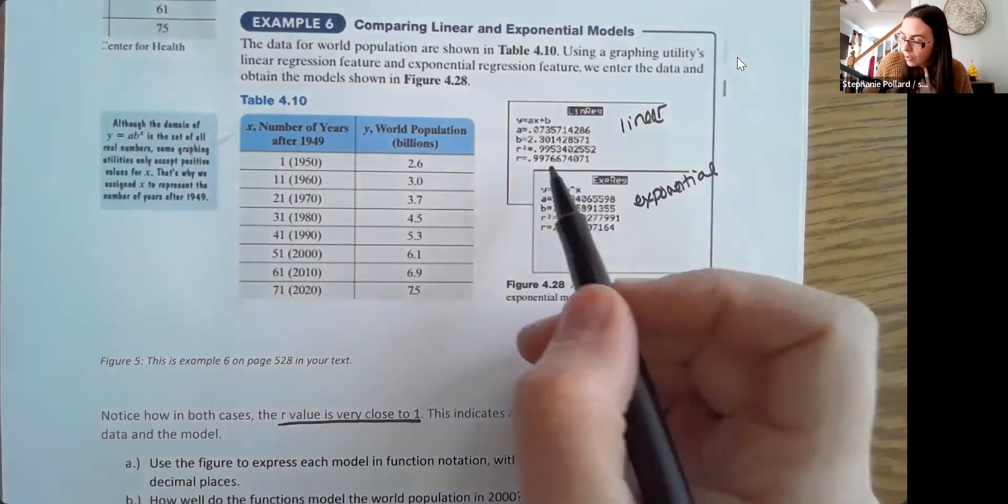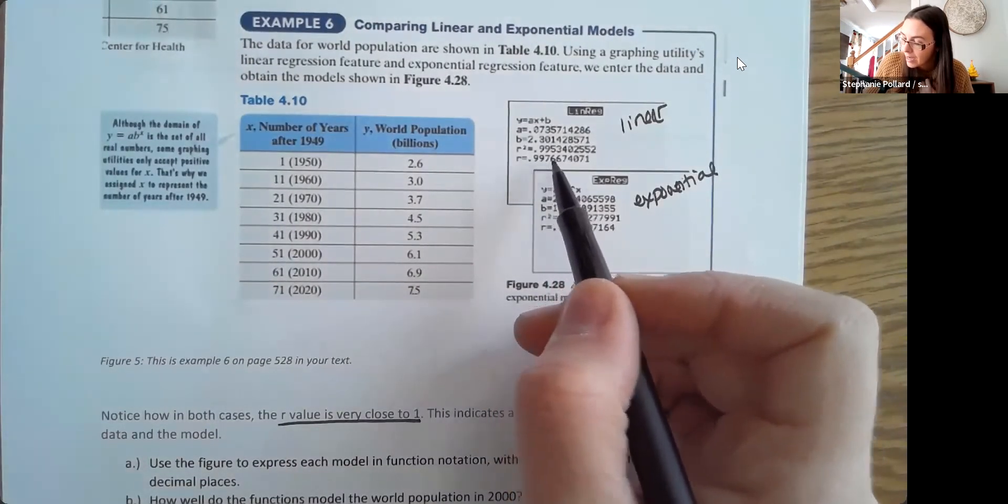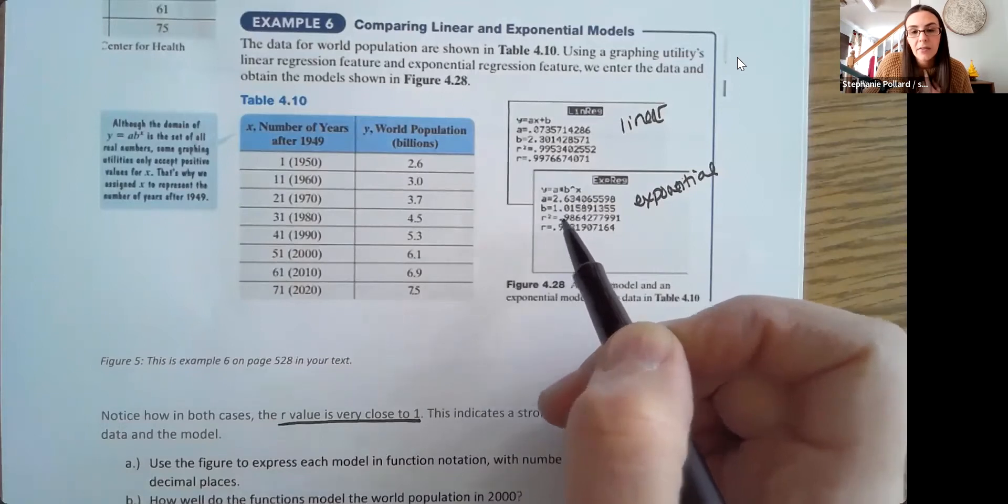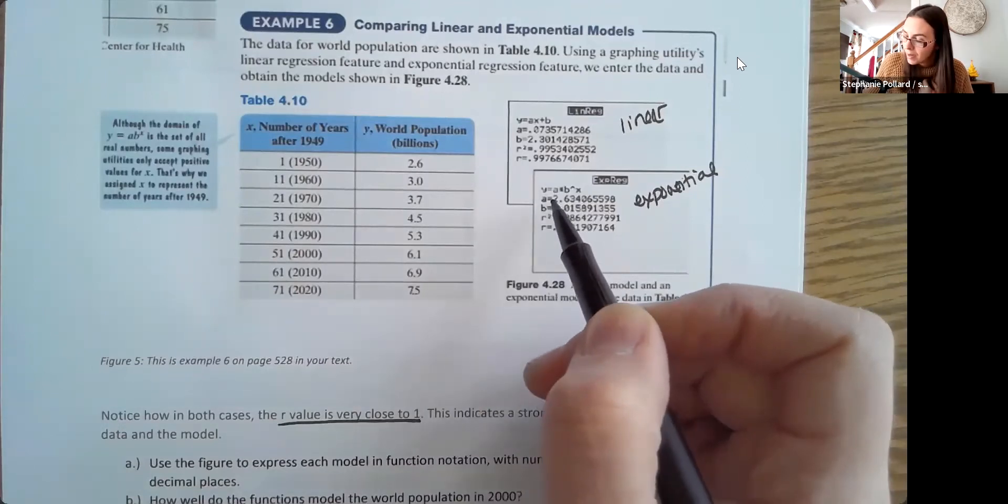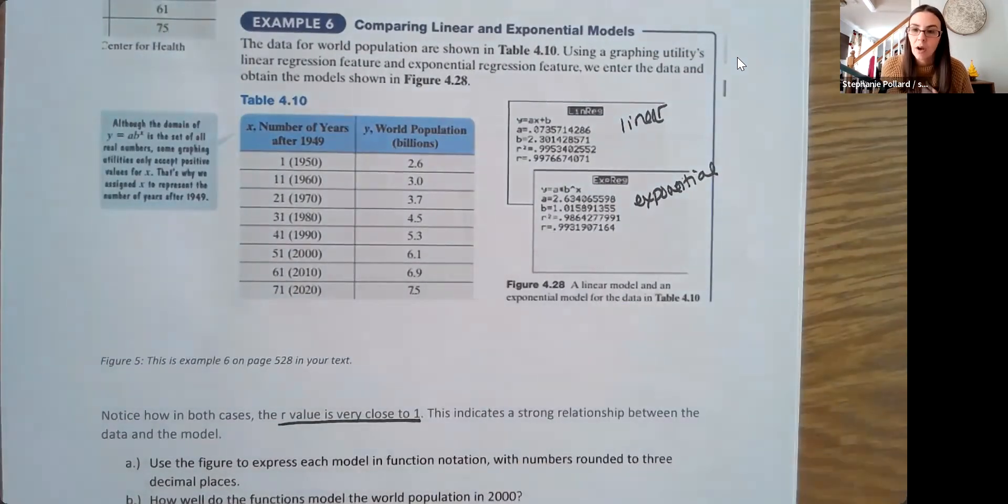This one is a bit stronger, right? 0.9976 and 0.9931. 0.9976 is closer to one. But again, 0.99 is very, very strong in both cases. So both would really be good models.